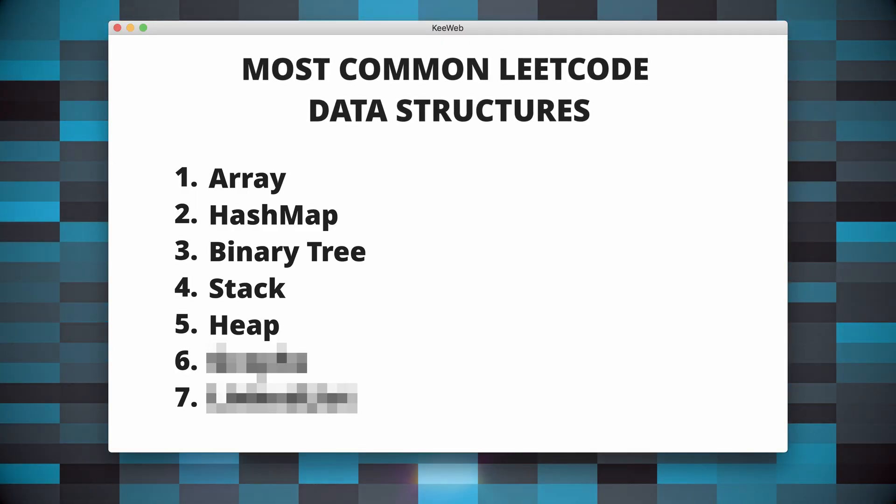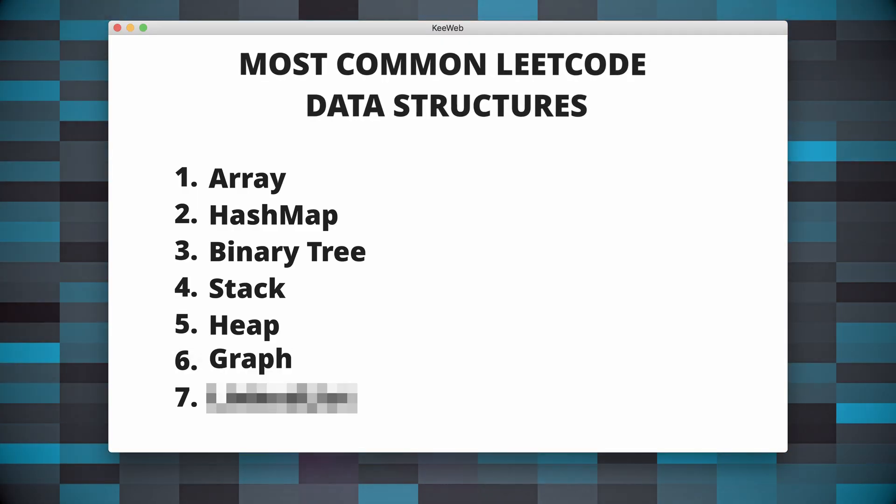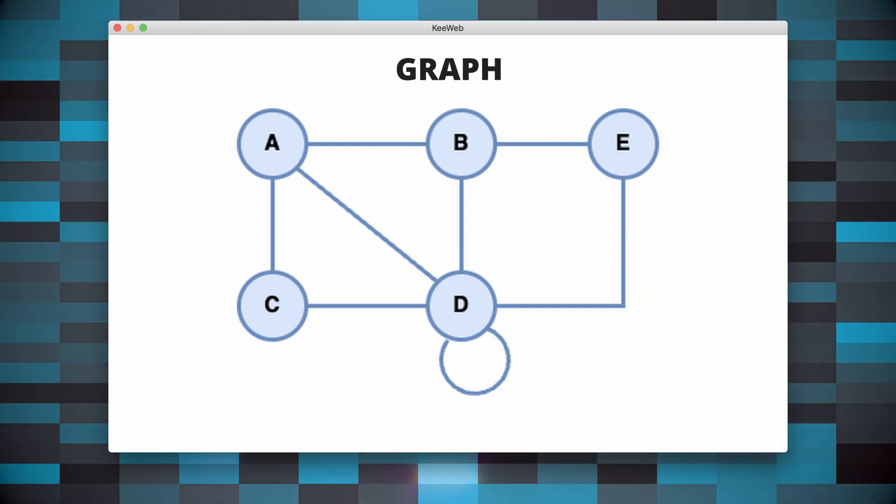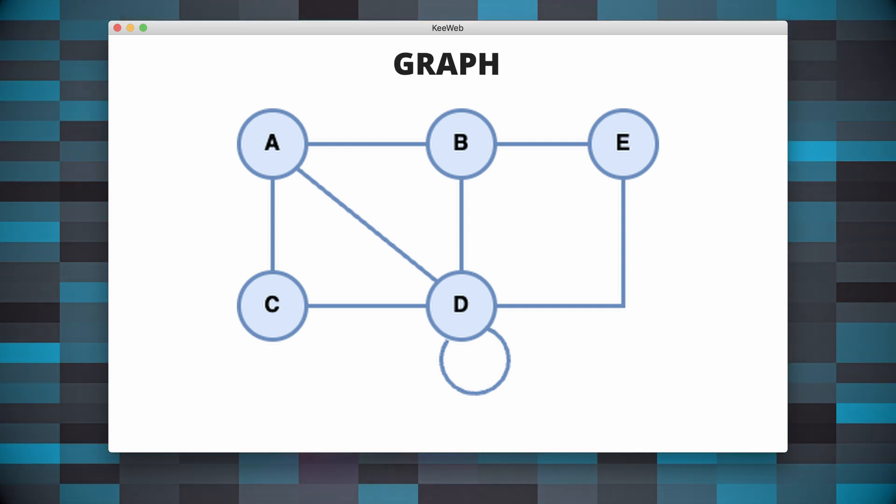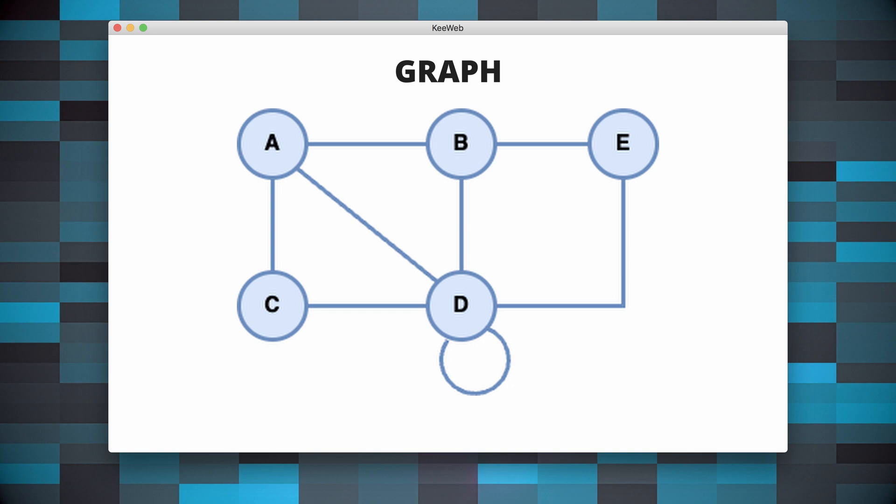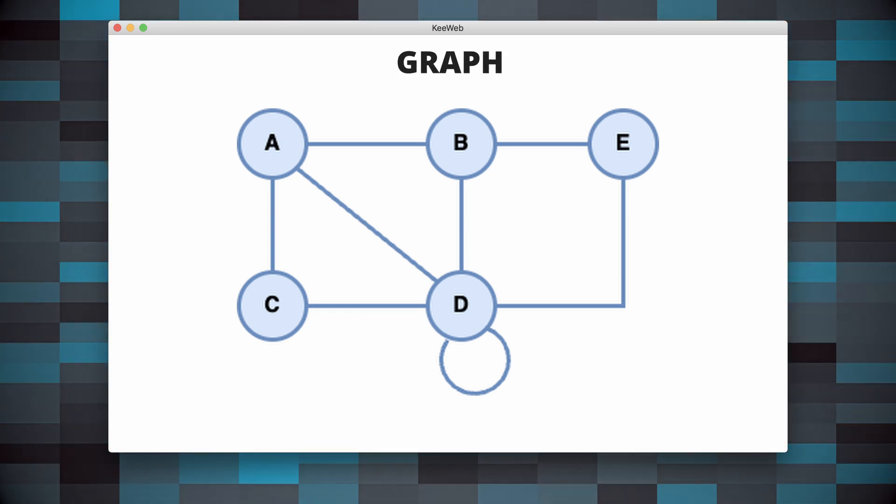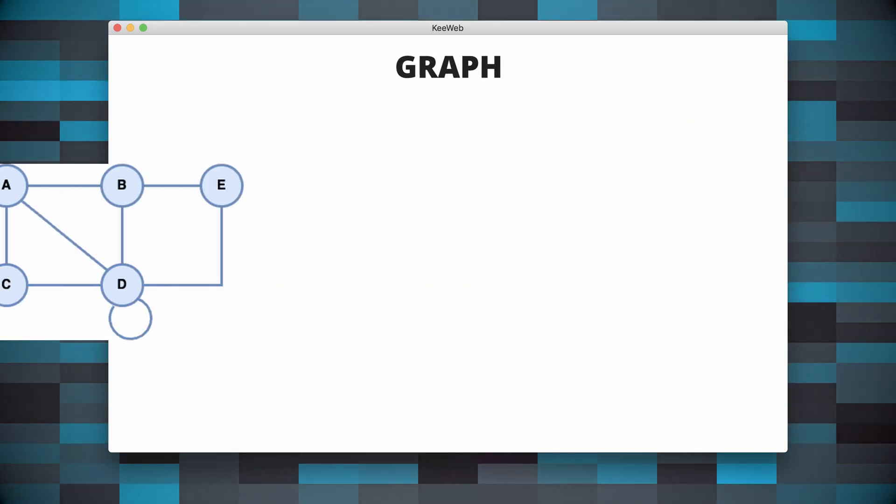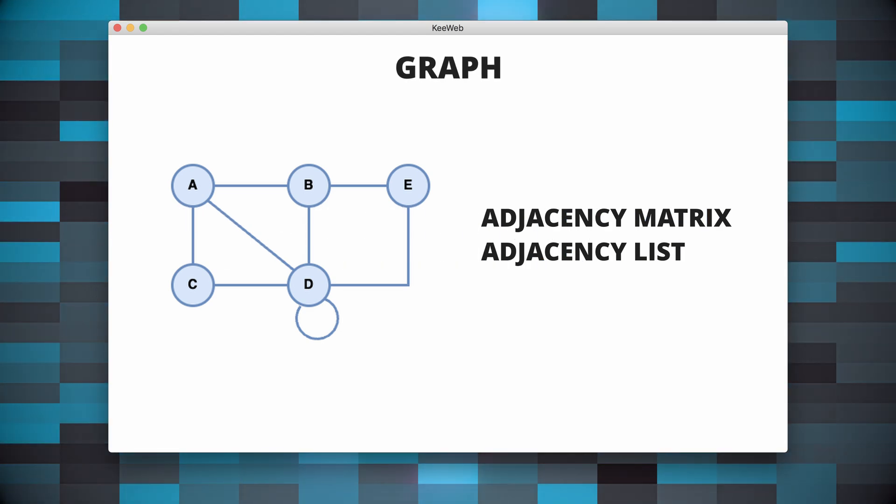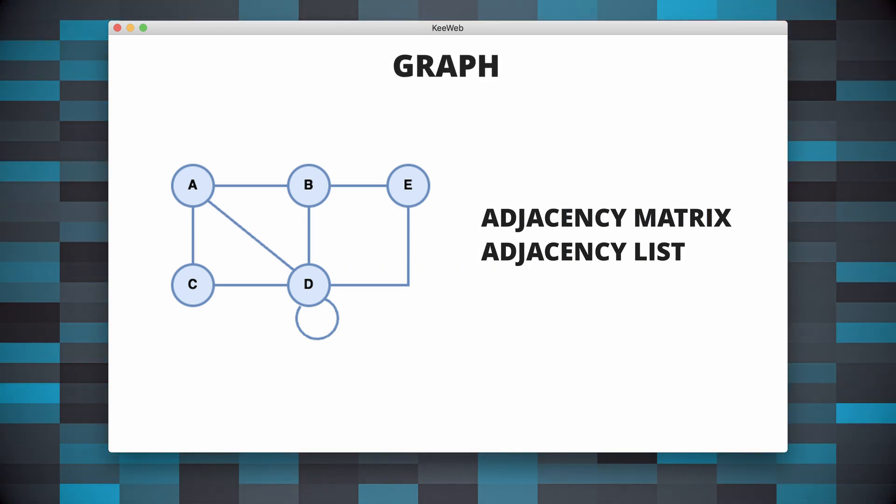Let's now talk a bit about graphs. There are various ways to represent a graph data structure, and the choice of representation depends on the nature of the problem and the type of operations that need to be performed. Two common representations are adjacency matrix and adjacency list.